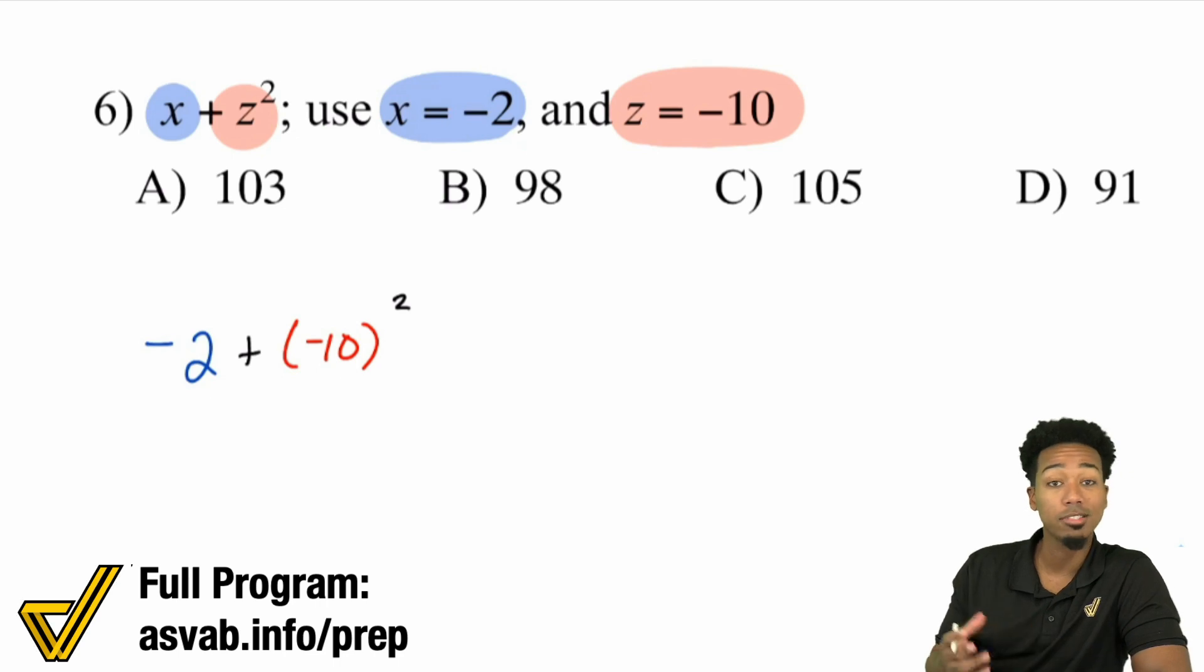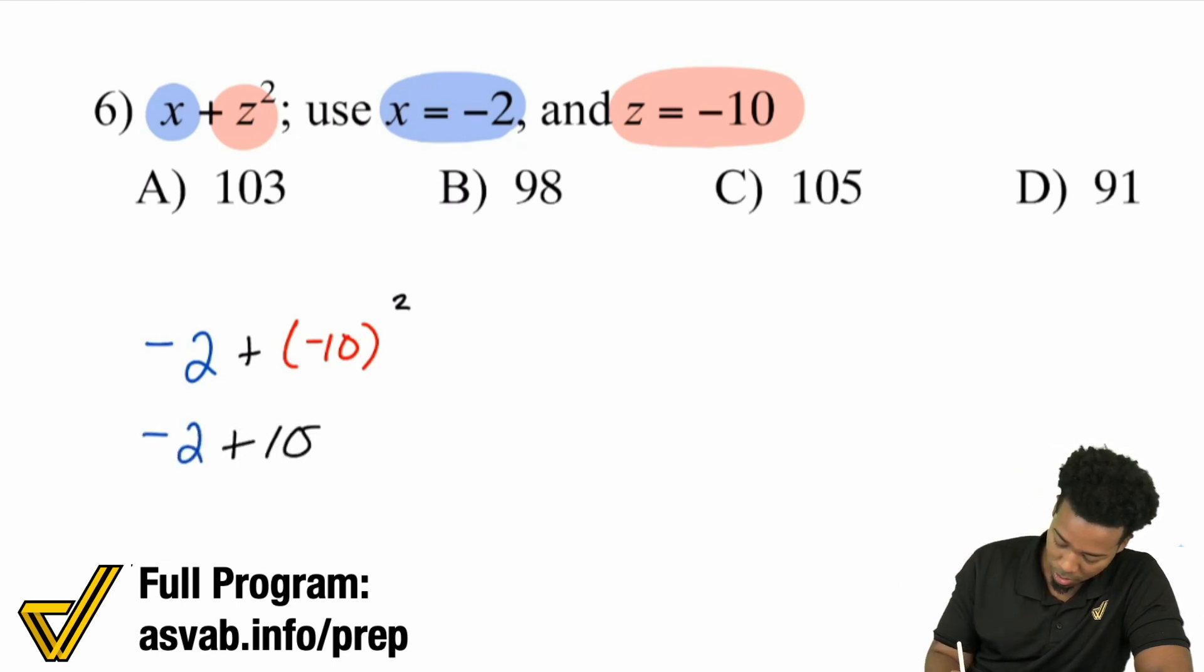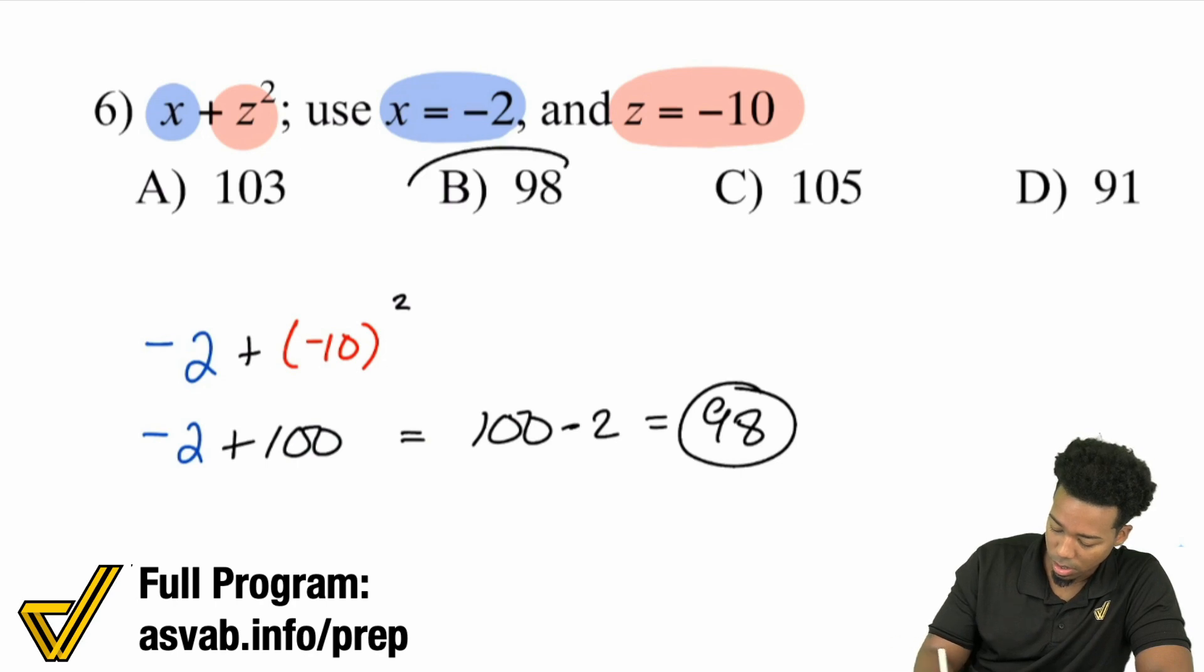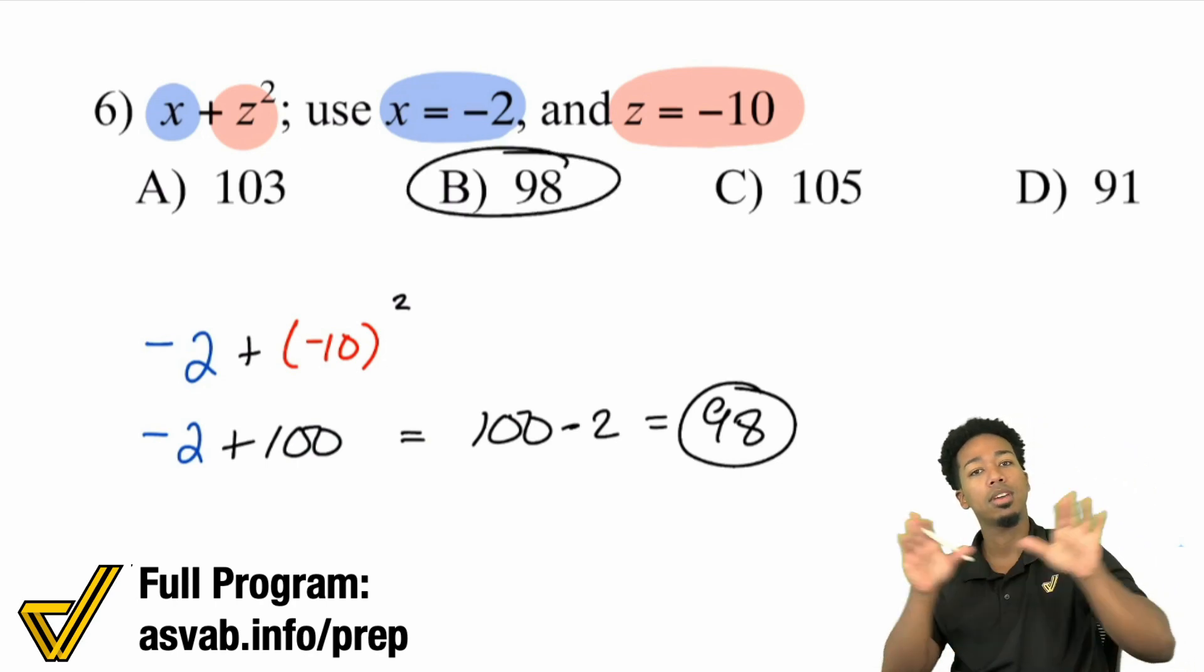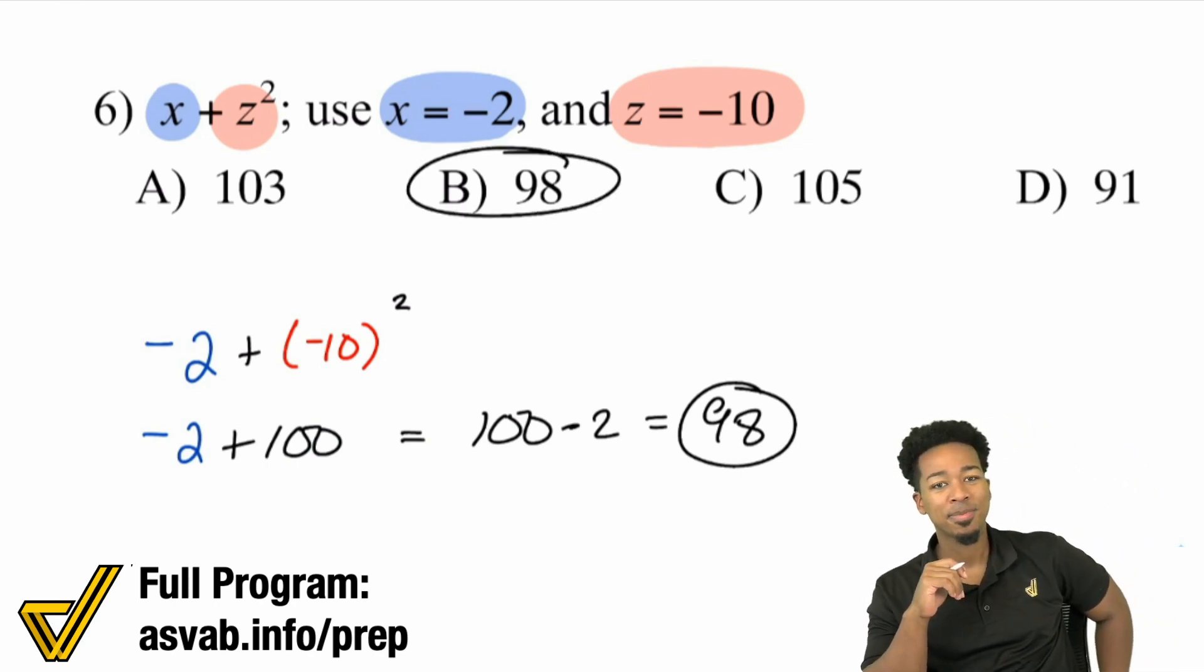Squaring something is multiplying that number by itself. -10 times -10, positive 100. So we have -2 + 100, which is the same thing as saying 100 - 2. 100 - 2 is 98. All good. There's B. And we're set, just like that.